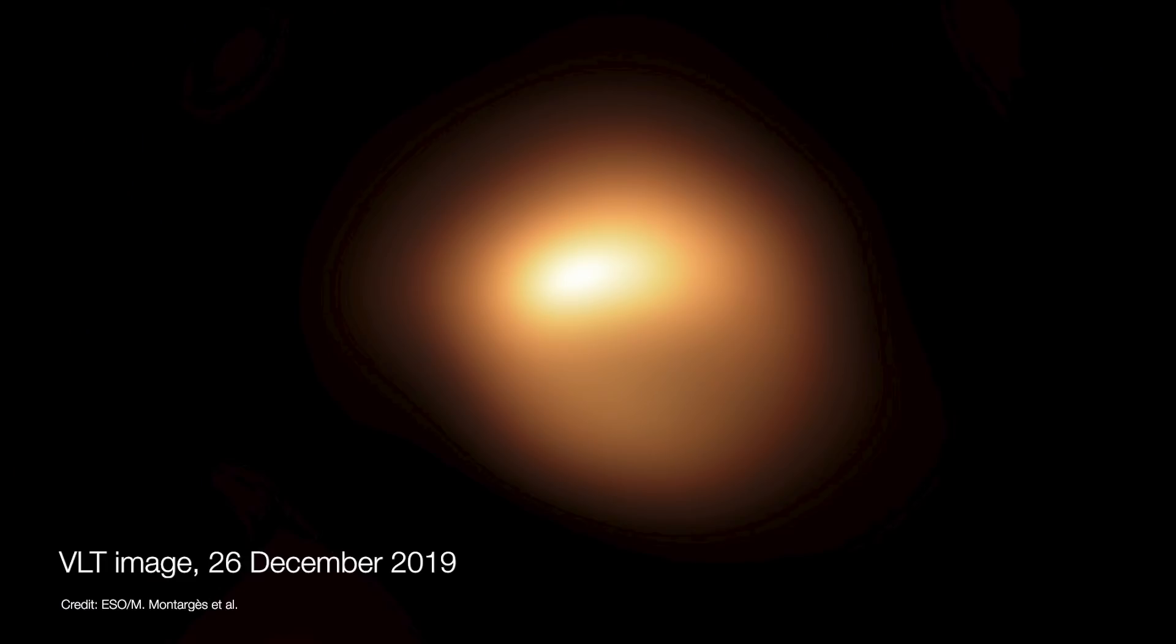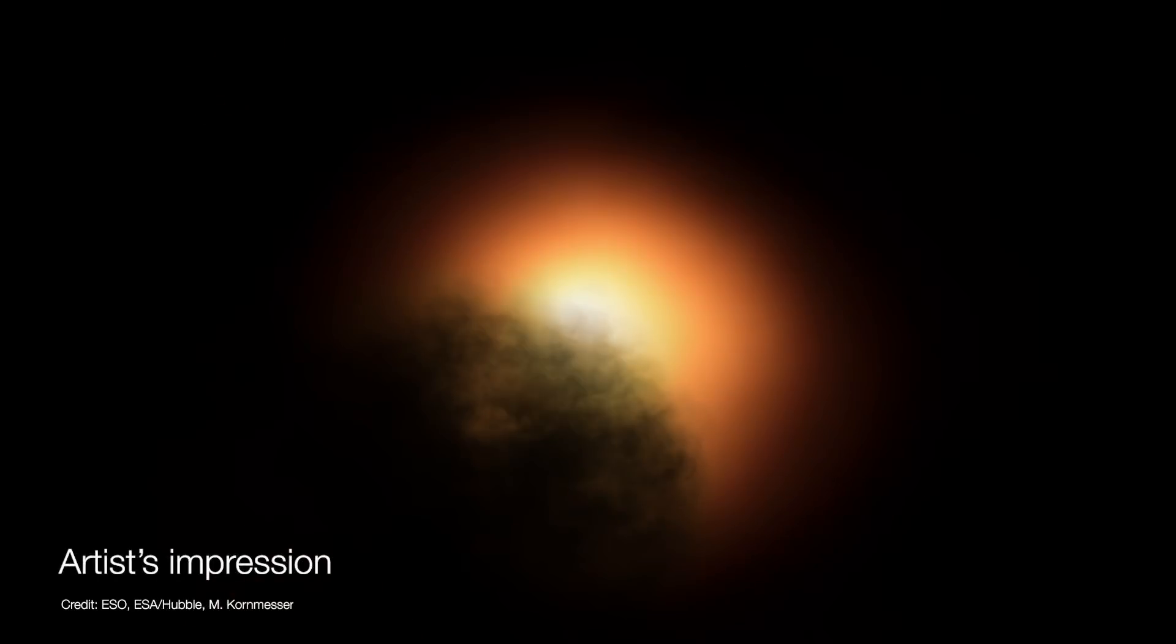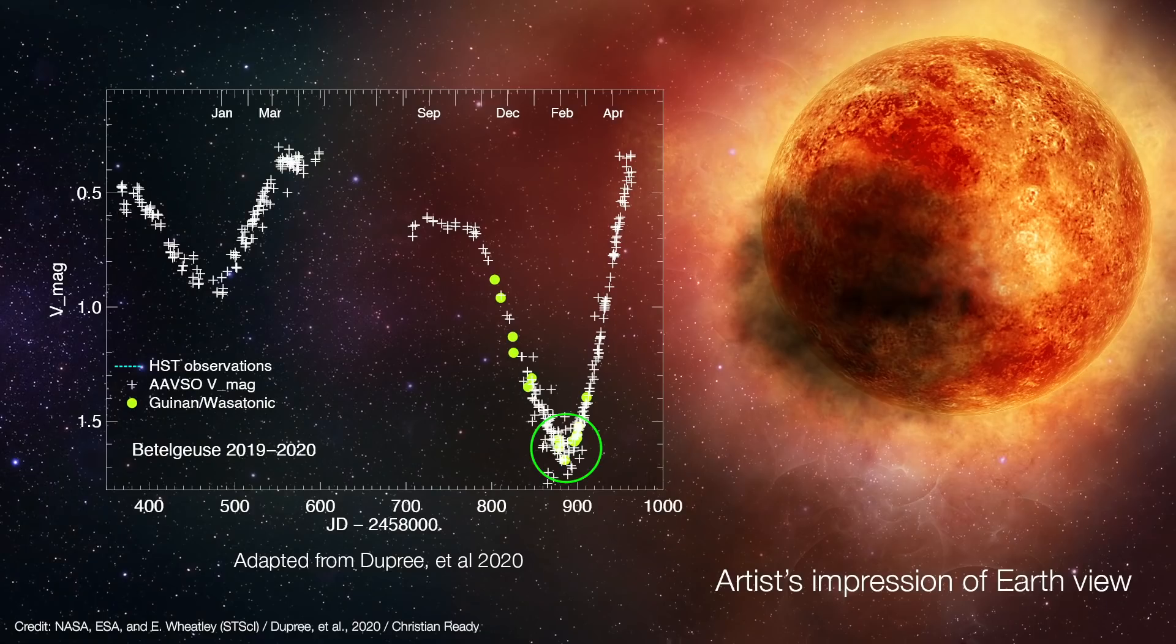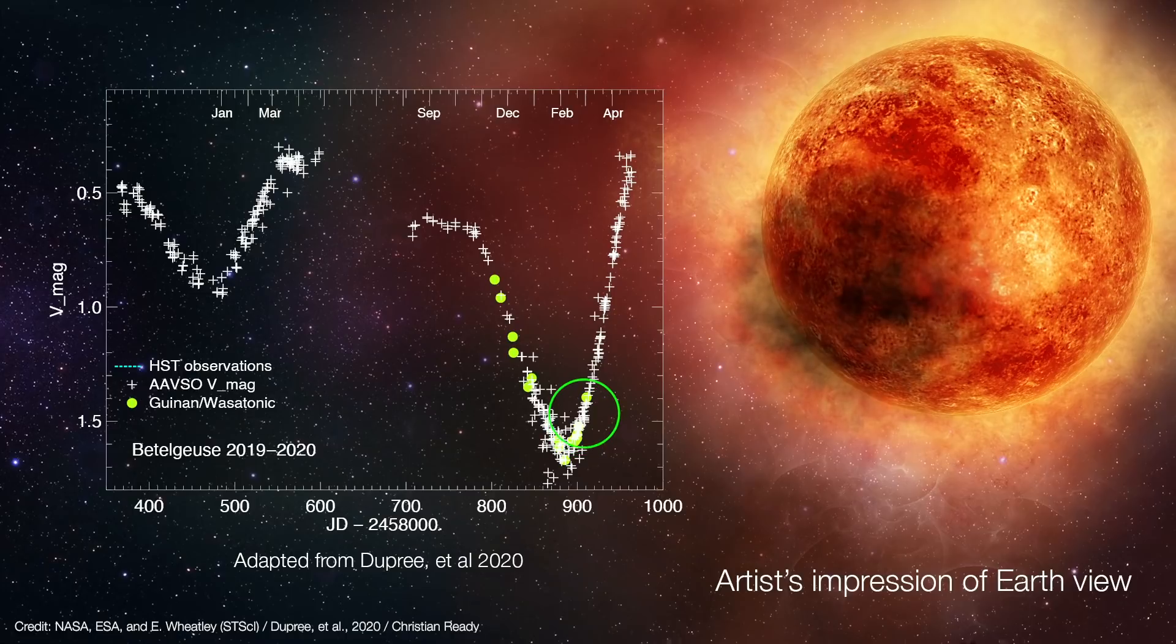In this scenario, the appearance of the star in the December 26 image taken with the Very Large Telescope would be explained by the escaping dust cloud obscuring the star's southern hemisphere. Over the next several weeks, the dust cloud grew more opaque, deepening the Great Dimming in February 2020. Meanwhile, the star and its atmosphere returned to its previous state. So as the dust cloud dissipated, the star appeared to recover to its normal brightness.